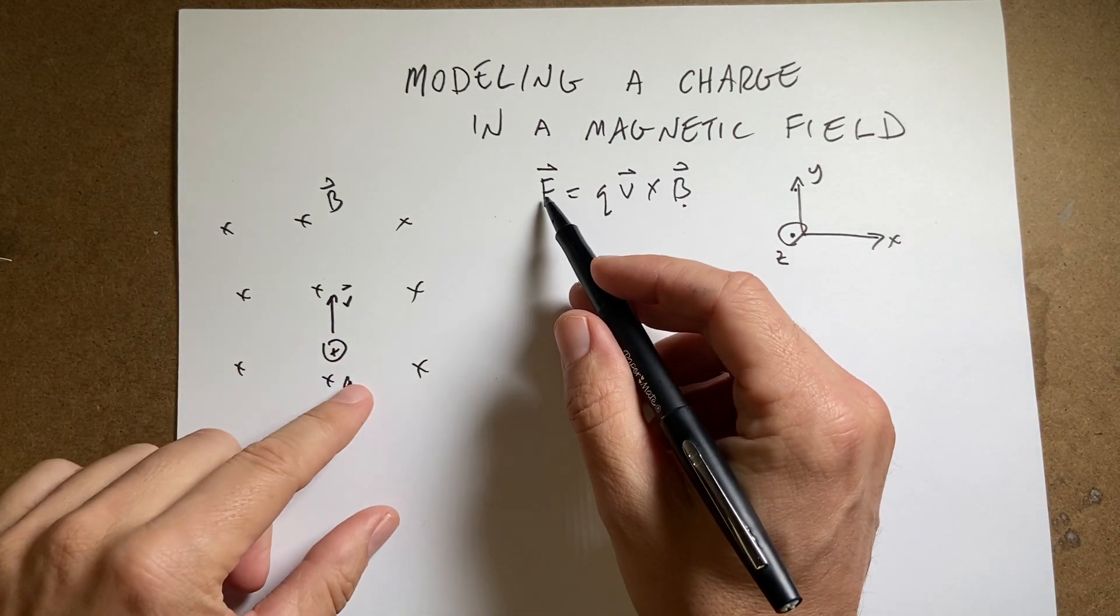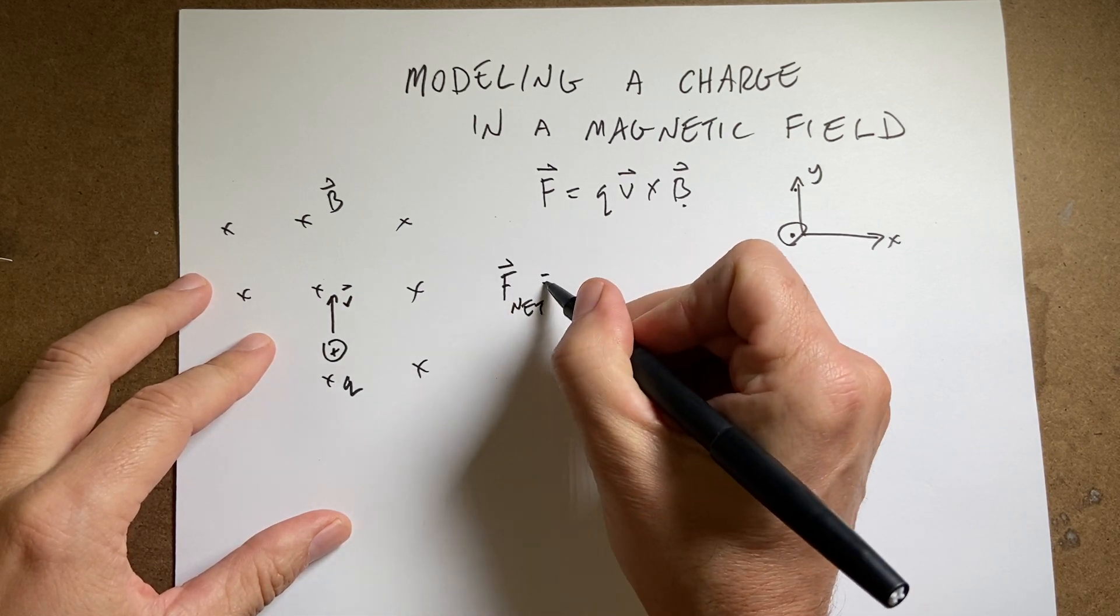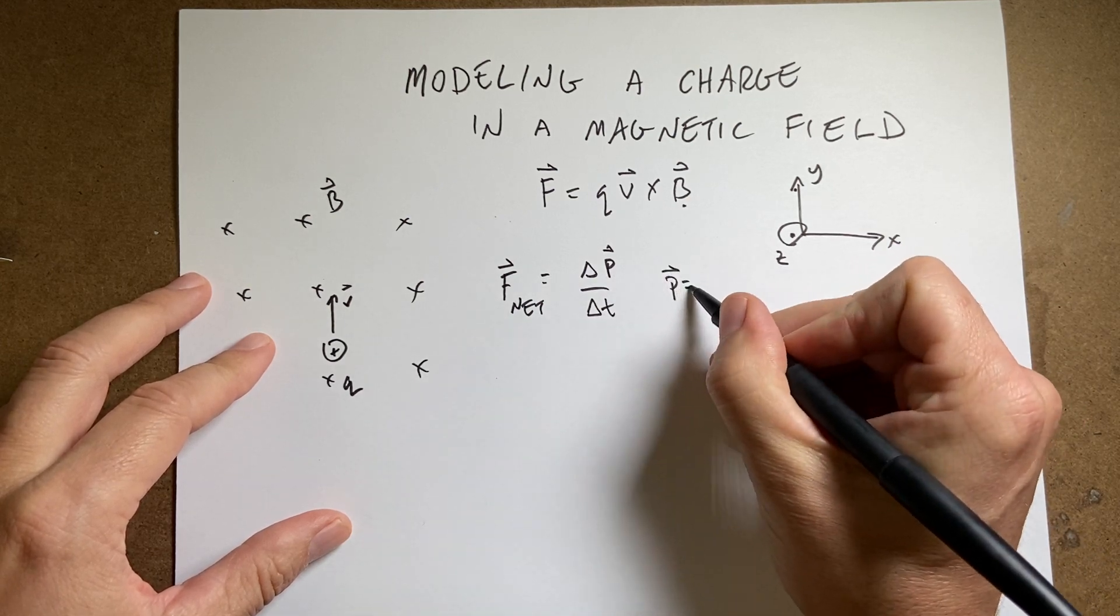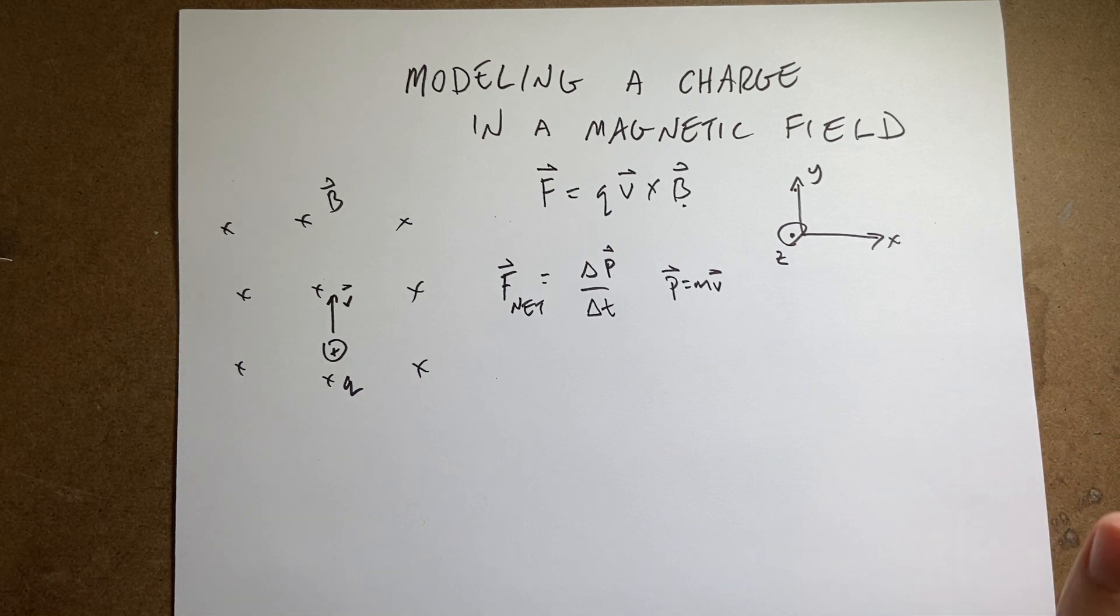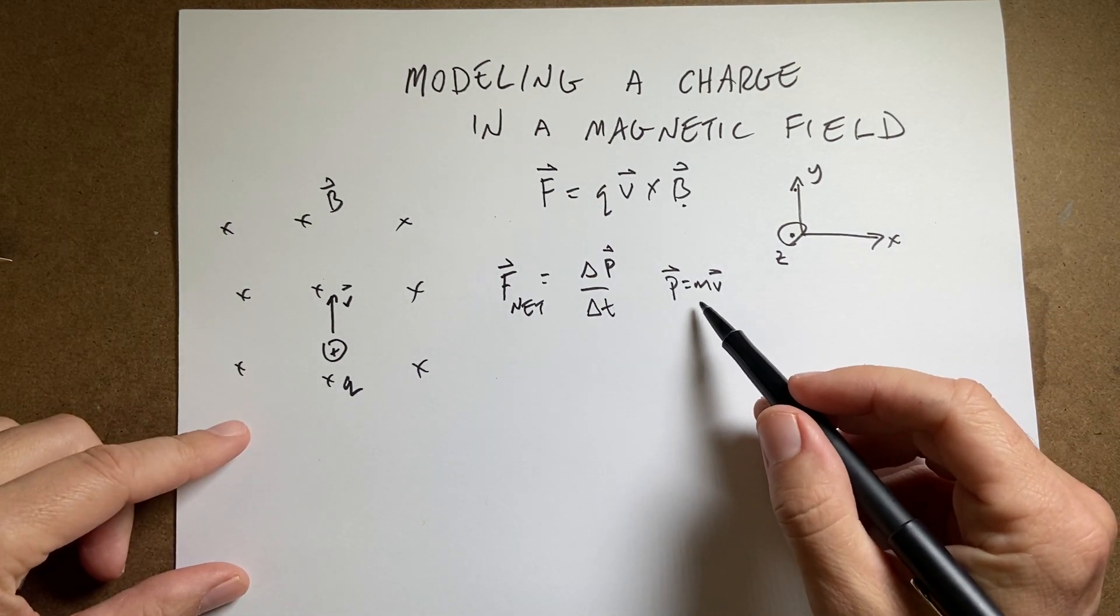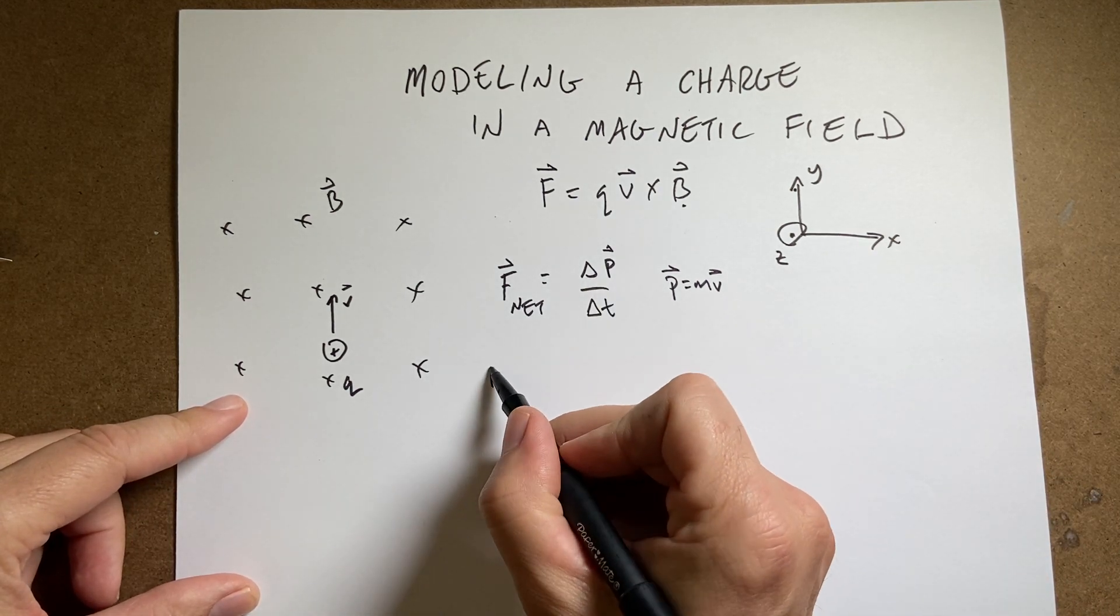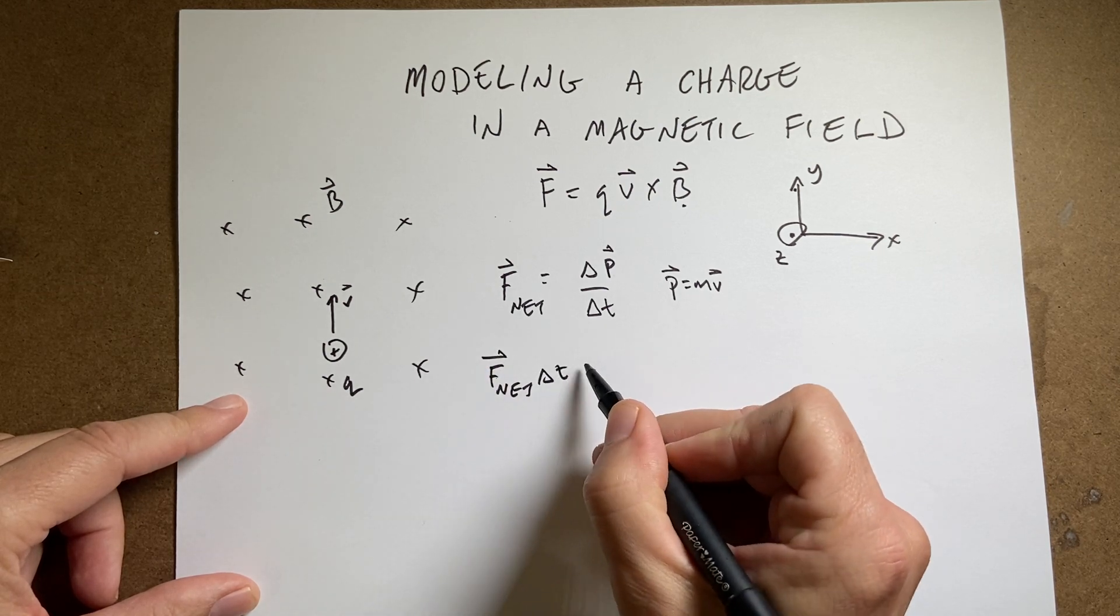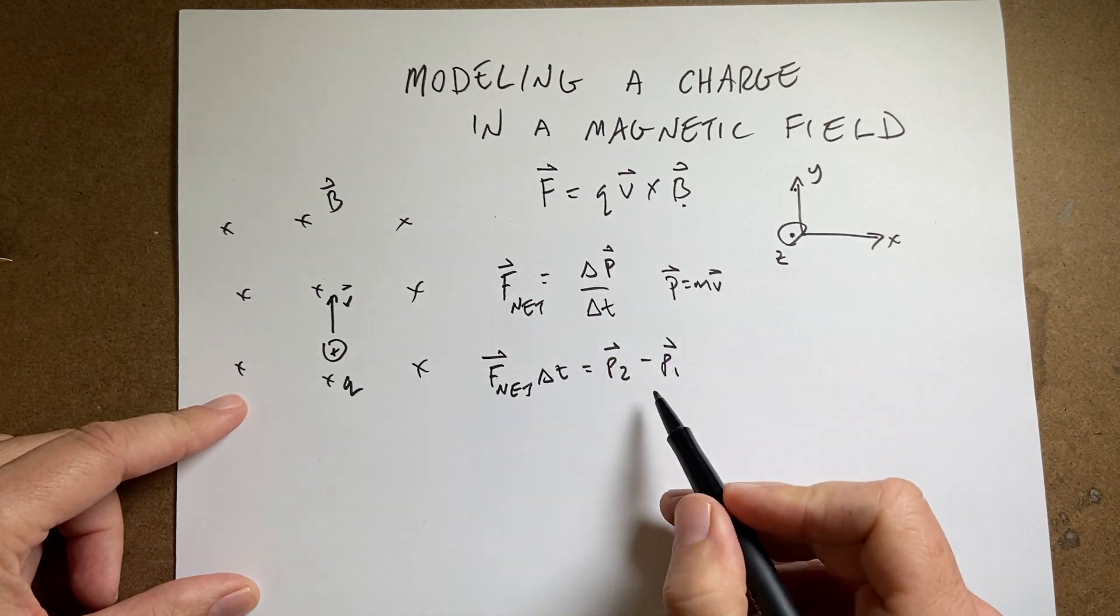But now if that's the only force acting on it, then we have the following. F net is the change in momentum over the change in time, where momentum is mass and velocity. If the thing is moving slow, I mean not near the speed of light, so this should be fine to use this definition of velocity. If I solve this, I can write this as the following. F net delta T equals P2 minus P1. That's the change in momentum.